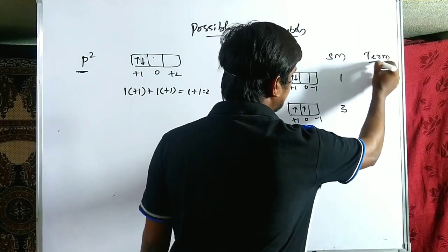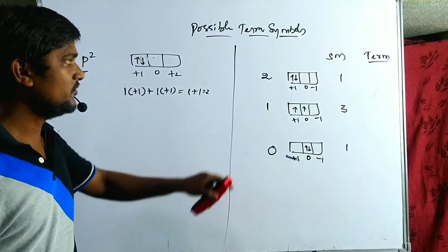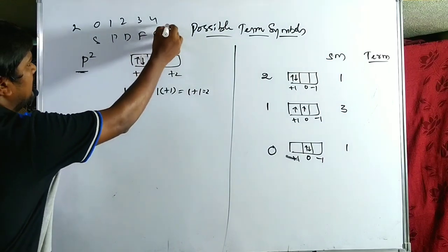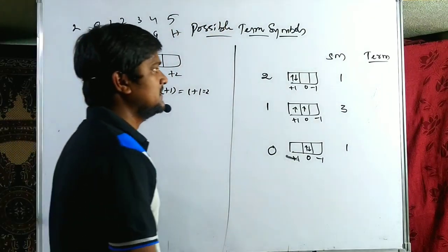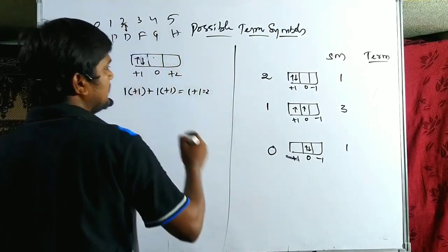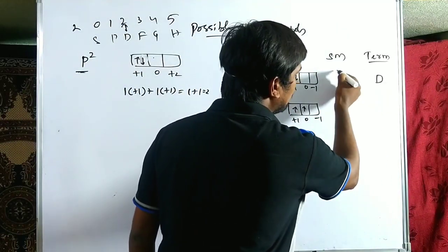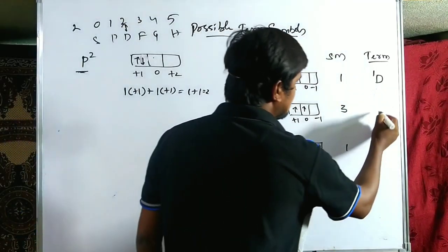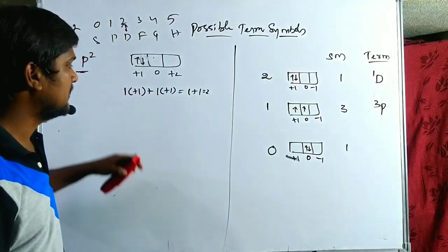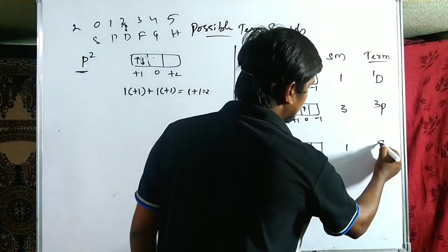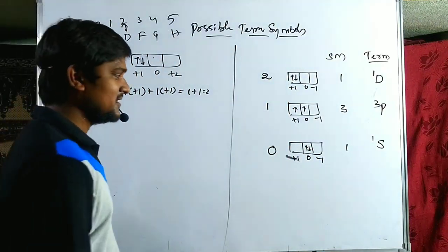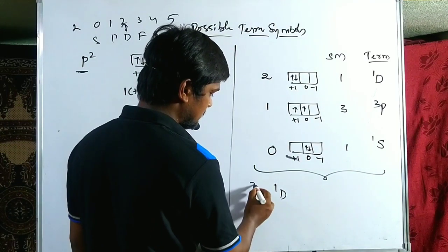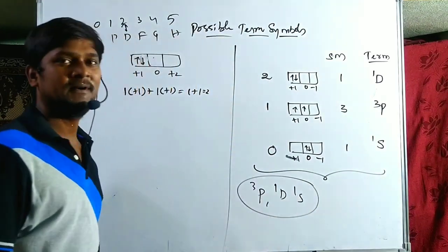Recalling that L values 0, 1, 2, 3, 4 correspond to terms S, P, D, F, G (excluding J): when L = 2 the term is D with spin multiplicity 1, giving ¹D; when L = 1 the term is P with spin multiplicity 3, giving ³P; and when L = 0 the term is S with spin multiplicity 1, giving ¹S. Therefore, the possible term symbols for the p² configuration are ¹D, ³P, and ¹S.